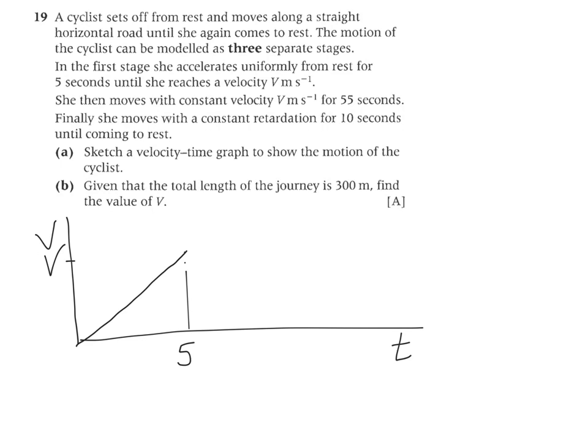Then it says she moves with constant velocity for 55 seconds. So 55 seconds, there we go. So constant velocity, a horizontal line, so that is 60. Therefore, another 55 seconds plus five, 60.